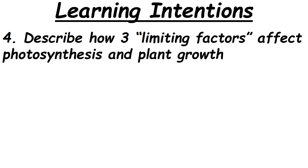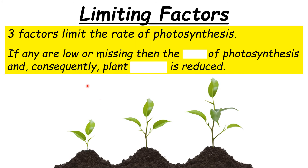The next part covers limiting factors and how they affect photosynthesis and plant growth. There are three limiting factors in this course: if any are low or missing, the rate of photosynthesis and consequently plant growth is reduced. Think about what environmental conditions plants need to grow.